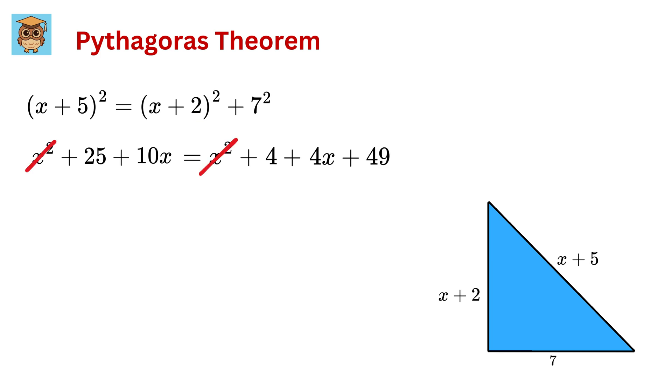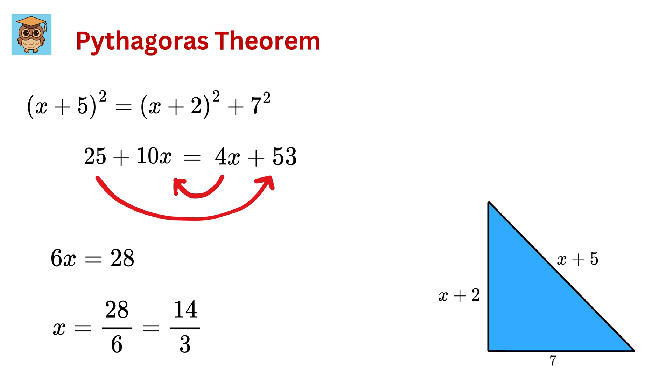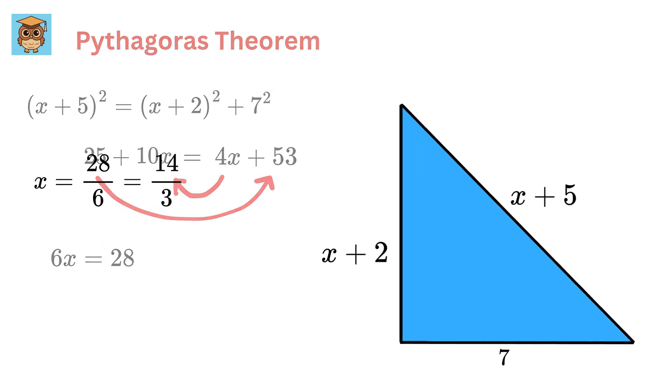This x² will get cancelled out, and we are left with 25 + 10x = 4 + 4x + 49, or 4x + 53. Take 4x on left side and 25 on right side to get 6x = 28, or x = 28/6, which can be simplified to 14/3.